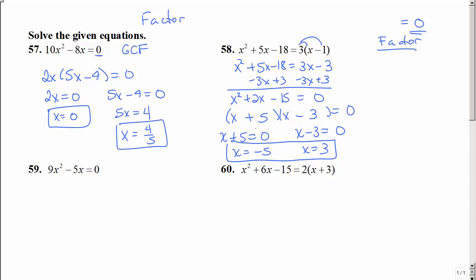Number 59 looks just like 57. It has the zero, and we're going to look for the GCF. This time they just have an x in common. So we set those both equal to zero. So that one's done. Here I need to add 5, and divide by 9.